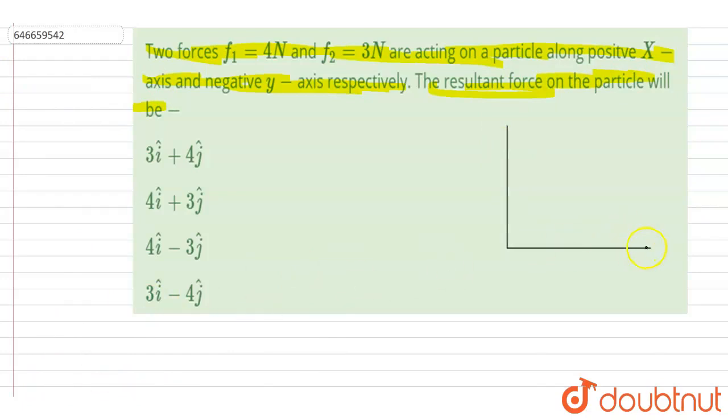this, one of them is acting along x-axis, the other is along negative y-axis. So if I write down the f1 vector, it is acting along x-axis, so it is 4î. The f2 vector is